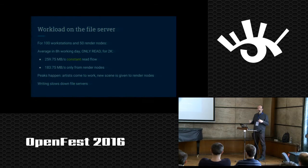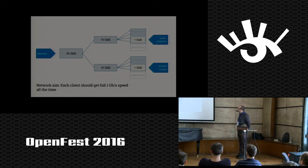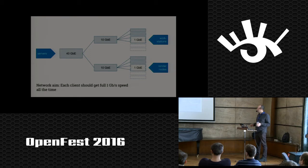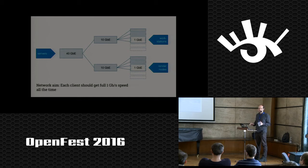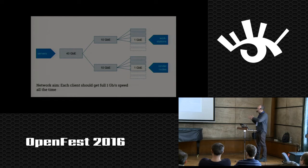On the left we have servers, on the right we have workstations and render nodes. The aim is to have workstations and render nodes at one gigabit Ethernet speed all the time — whatever they do, reading and writing. With the network infrastructure, we have 40 gigabits on the server side, then 10 gigabits, then one gigabit going to the workstations and render nodes.